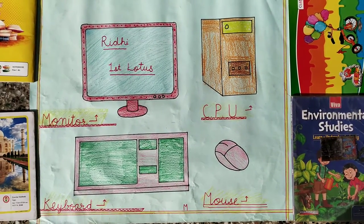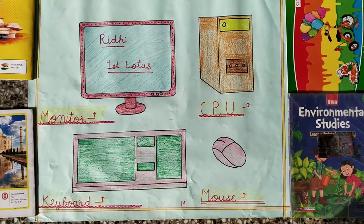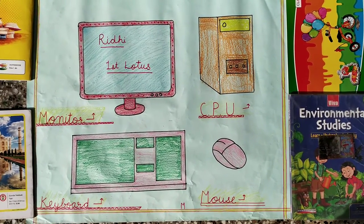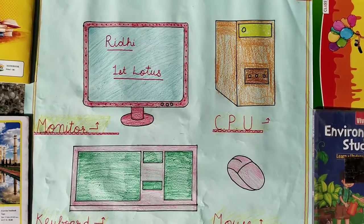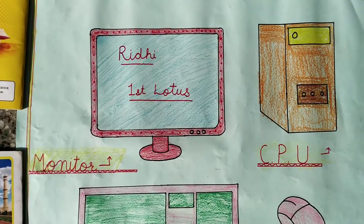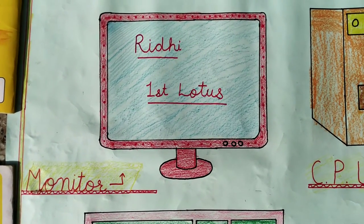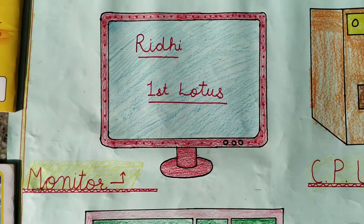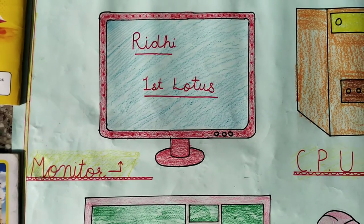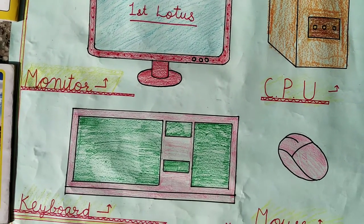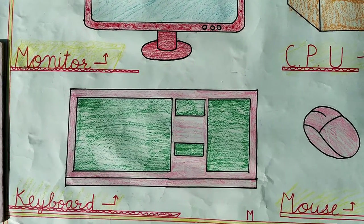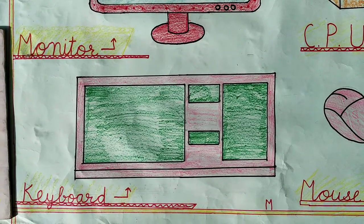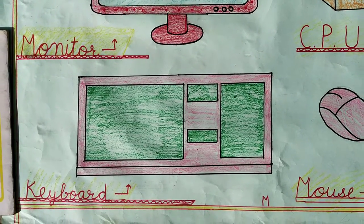Have you seen a black box attached to your computer? That black box is known as the CPU, that is Central Processing Unit. The CPU is called the brain of the computer. Just as our brain controls all the different parts of the body and makes them work together, similarly the CPU controls all the other parts of the computer.